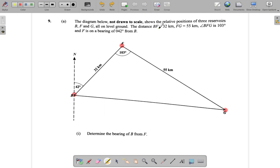The distance BF is 32 kilometers. That means from here to here is 32. The distance FG is 55. From F to G, that's 55.